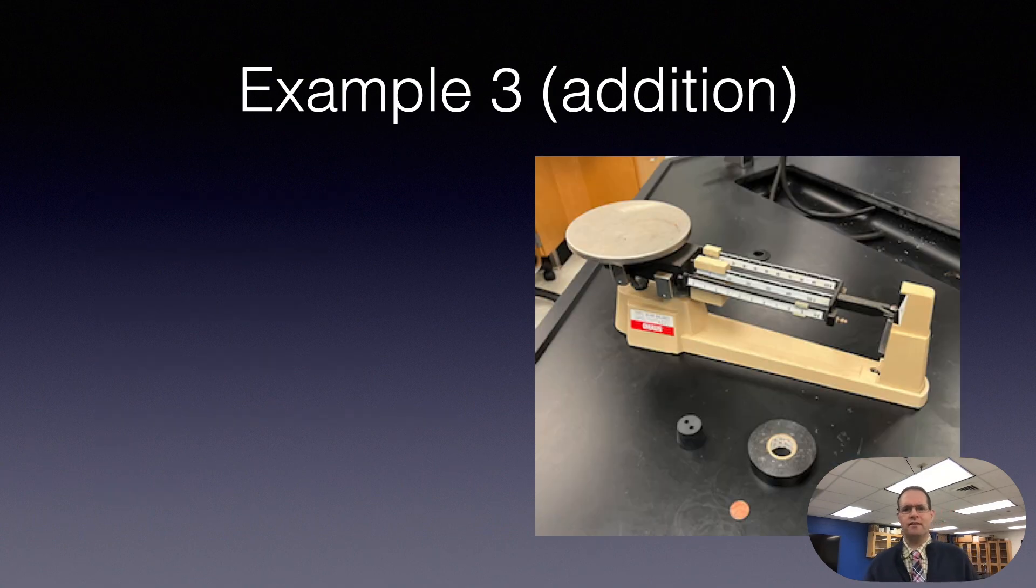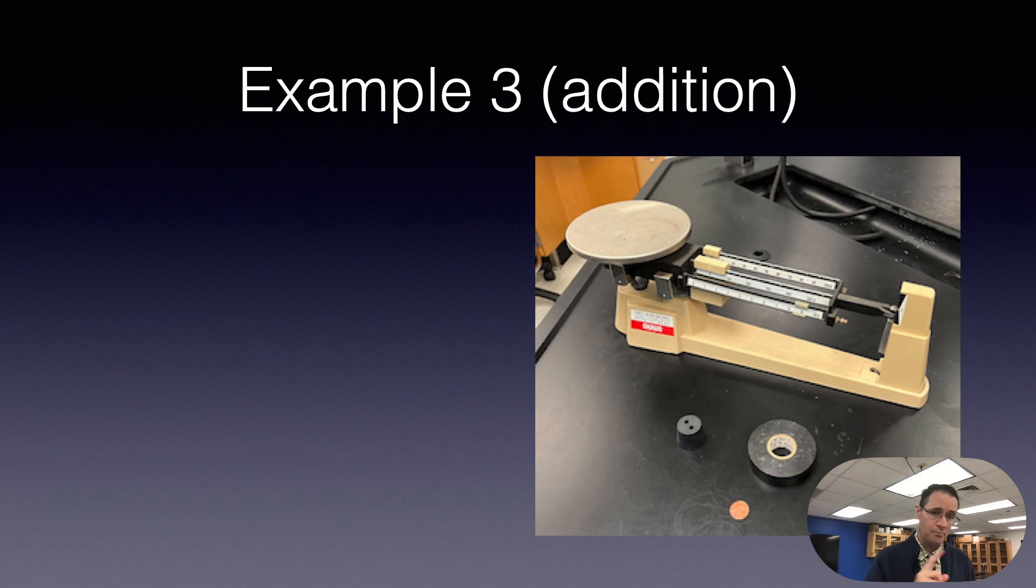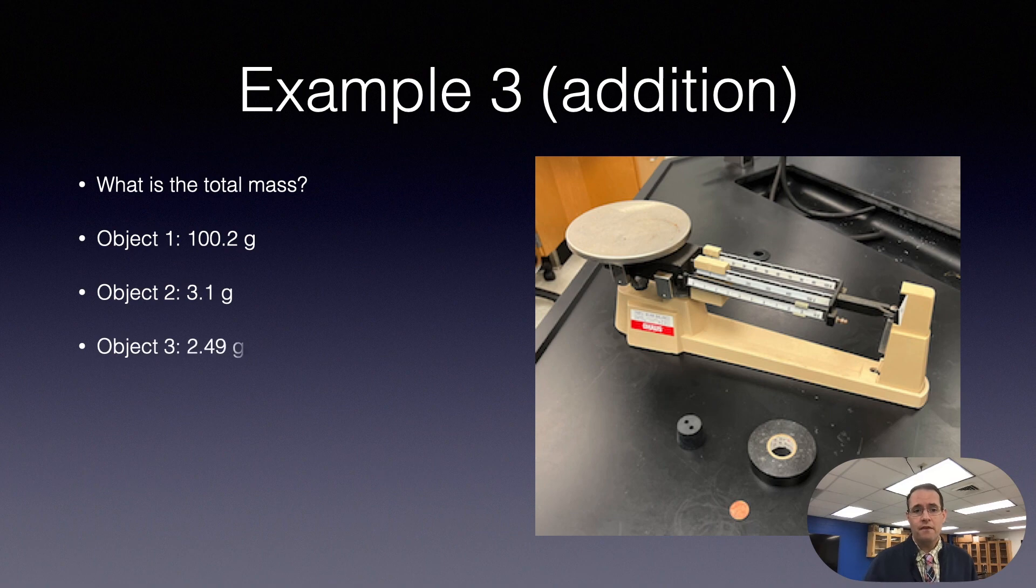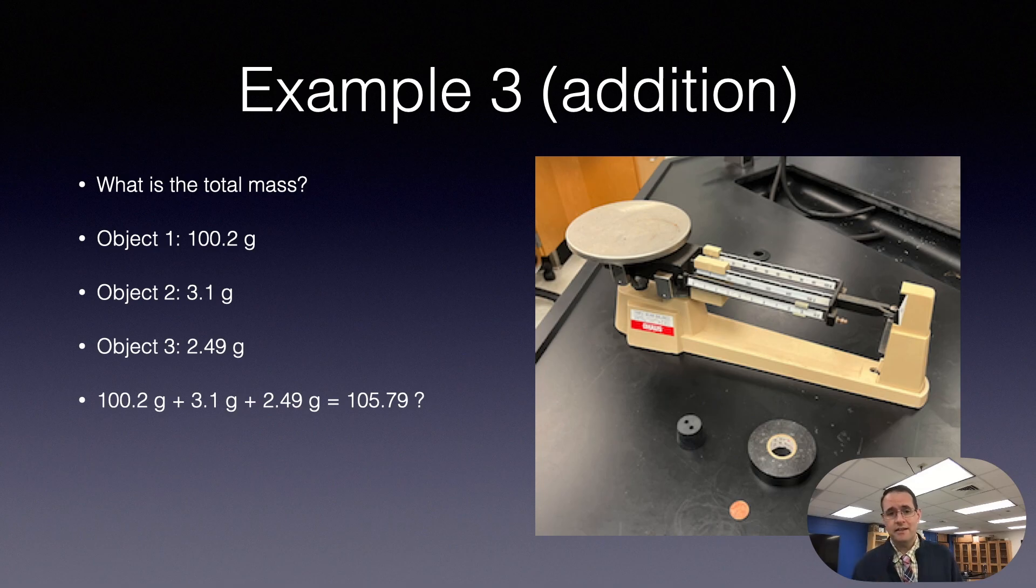Let's look at one more example. Let's say we have this balance here and we want to add up the mass of all of these three objects which are weighed separately on maybe even different balances. We want to know what is the total mass. The first object weighs 100.2 grams, the second object 3.1, and the third object 2.49. That might be the penny there. If you add all these up on your calculator, you get 105.79. Is that the answer? Do you write that? What do you do?